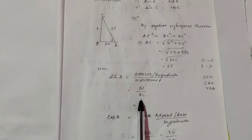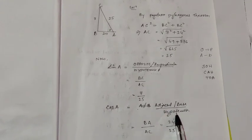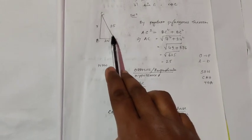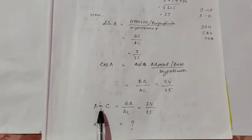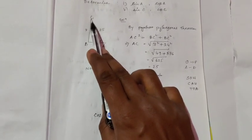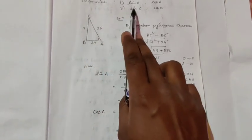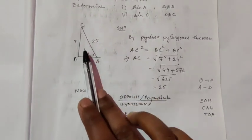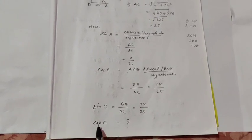Sine is perpendicular by hypotenuse. Taking angle A, the opposite side is 7 centimeters, and the hypotenuse is 25, so sine A equals 7 by 25. Similarly, cos is base by hypotenuse. The base adjacent to angle A is 24, so cos A equals 24 by 25. For sine C, taking angle C, the opposite side is BA which is 24, so sine C equals 24 by 25. Find cos C yourself to check your understanding.